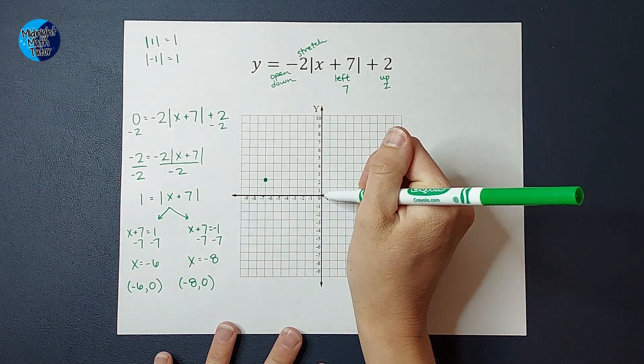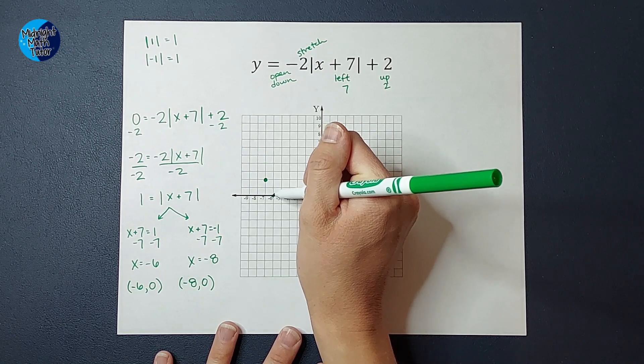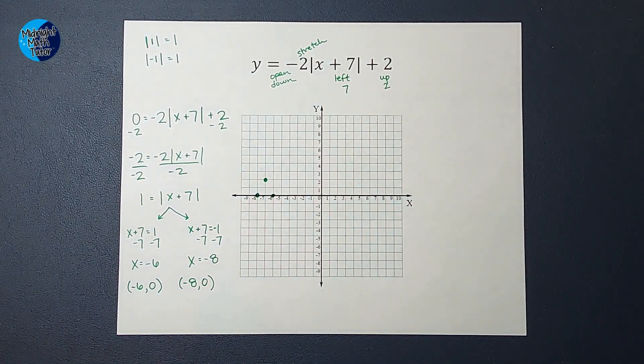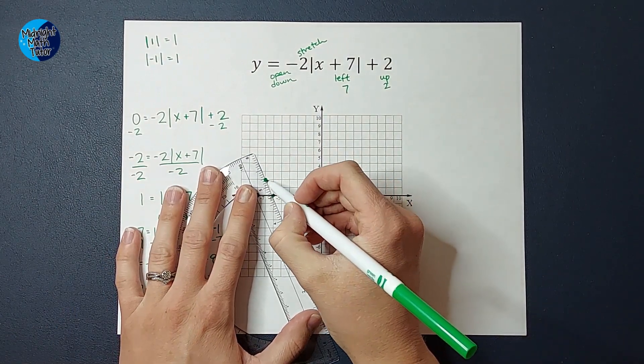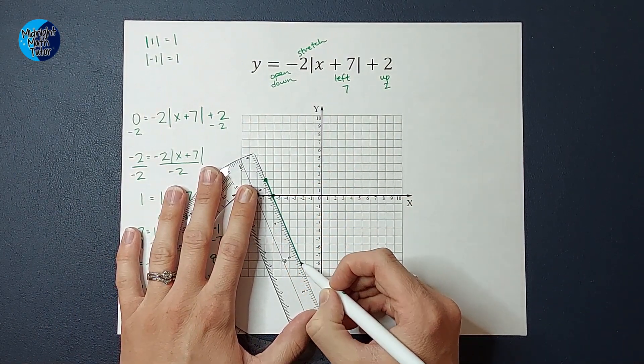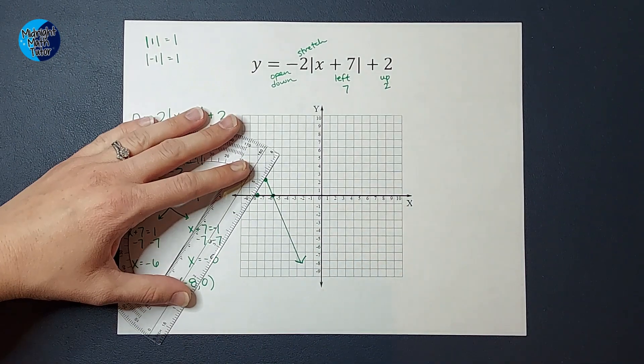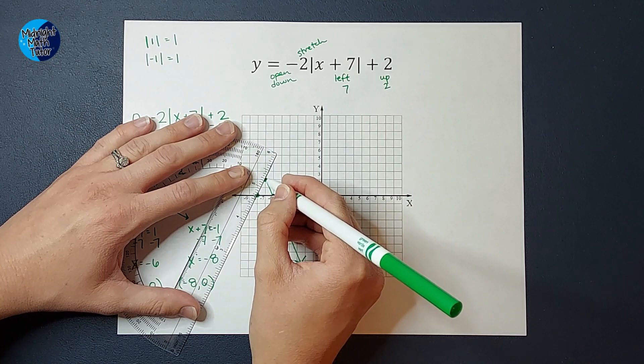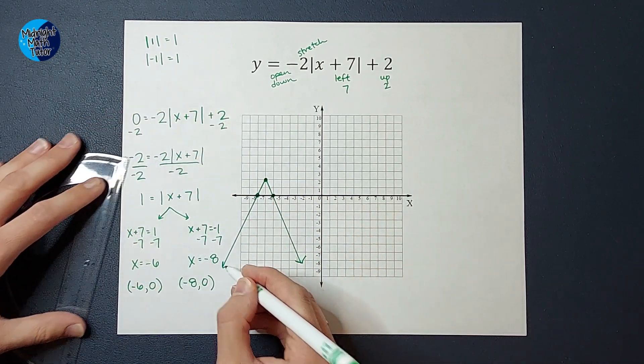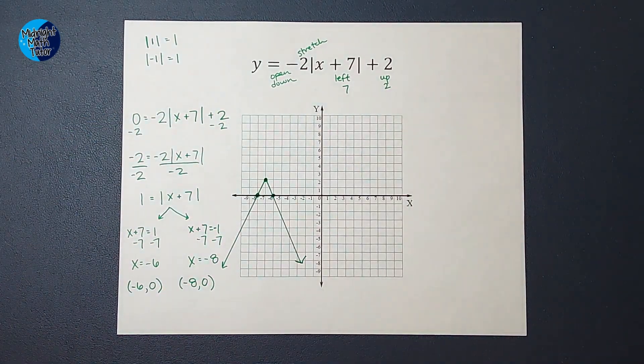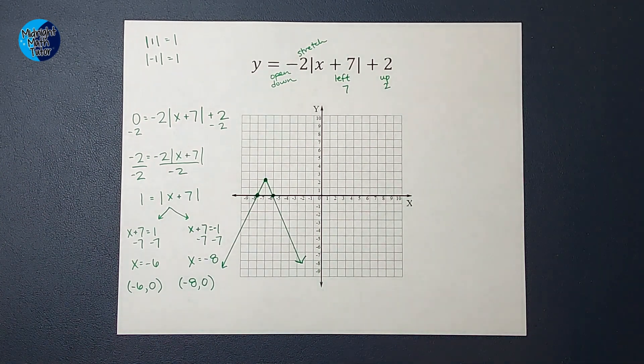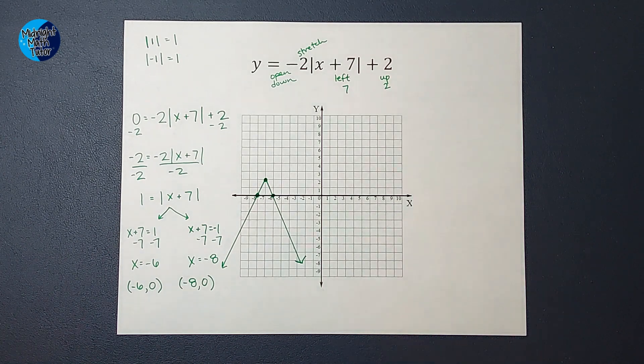So this is going to look a little something like this. We're going to graph these. It's going to look like that, and then we are going to draw our graph. Remember, it's going to be an upside down V, and these are straight lines. So do you see how that is skinnier than my parent graph was because of that number out front? Hope that this made sense. If you need some more videos with absolute value, I will link a playlist for you in the corner. Bye!